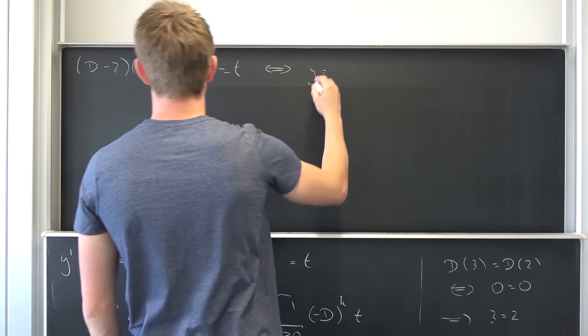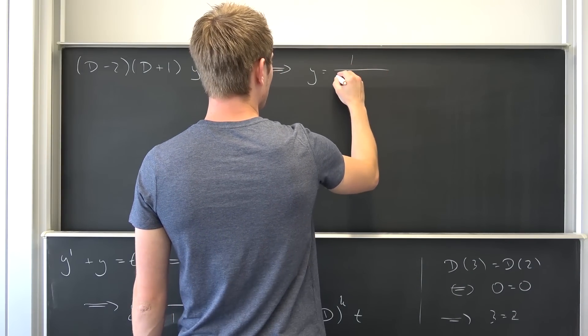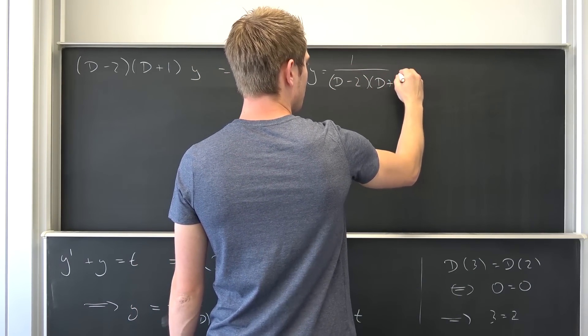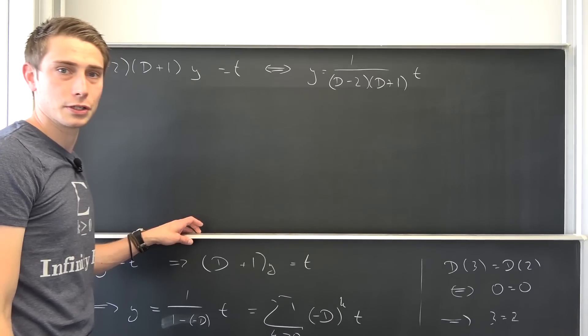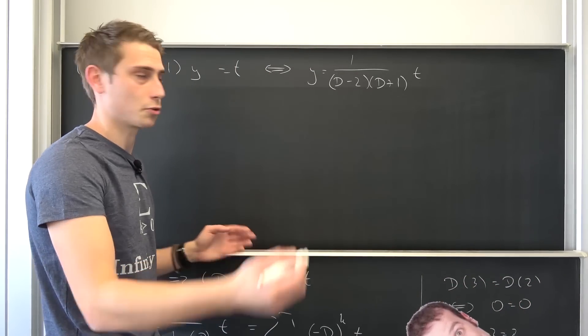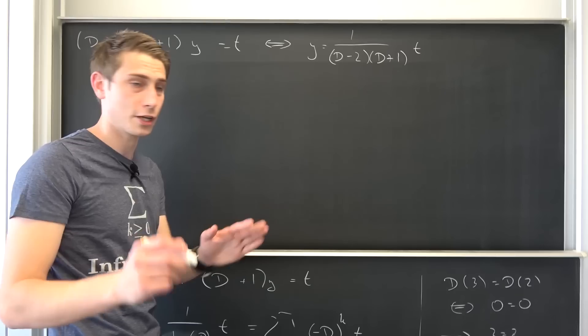Why it does nothing but 1 over (D - 2)(D + 1) times t. And now you can do partial fractions. You can find the outtake maybe on my other channel. I'm just going to speed it up, okay, we are going to do partial fractions real quick.